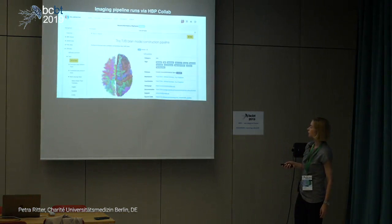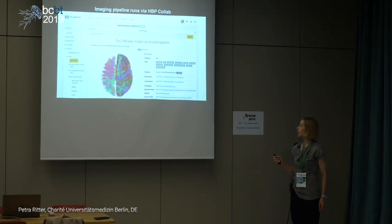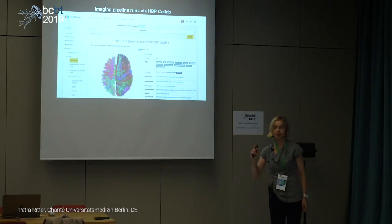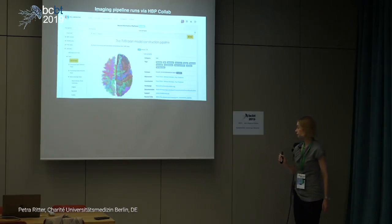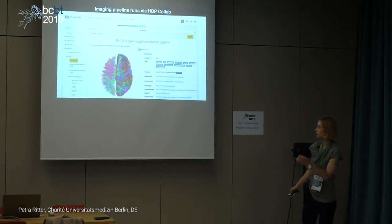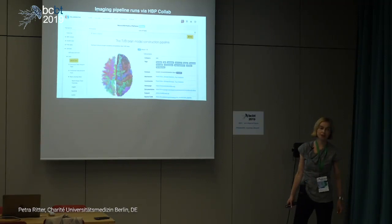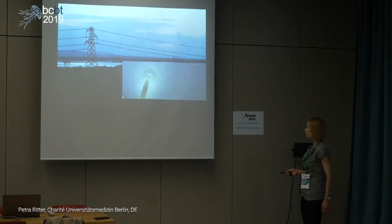In order to personalize these models, you can use your own subjects' data — these can be patients or healthy subjects — and for this you have to process the imaging data. We created a pipeline for this that is also open source and publicly available. It is already pre-installed on some supercomputers, including the Neuroscience Gateway cluster in the US and the Collaboratory of the Human Brain Project, where every scientist can register and use the computing resources. This pipeline generates the connectomes used to constrain your brain network models.